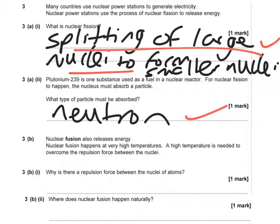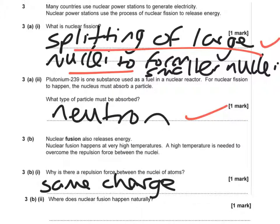Moving on to part B: nuclear fusion also releases energy and happens at very high temperatures. A high temperature is needed to overcome the repulsive forces between the nuclei. Why is there a repulsive force between the nuclei of atoms? That's because they have the same charge, which will get you the mark. You could also say the nuclei are positive, and positive charges — or same charges — repel one another.